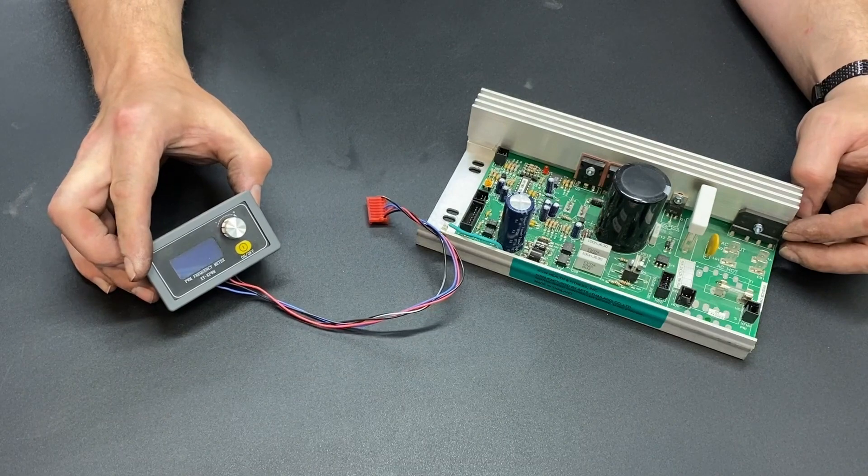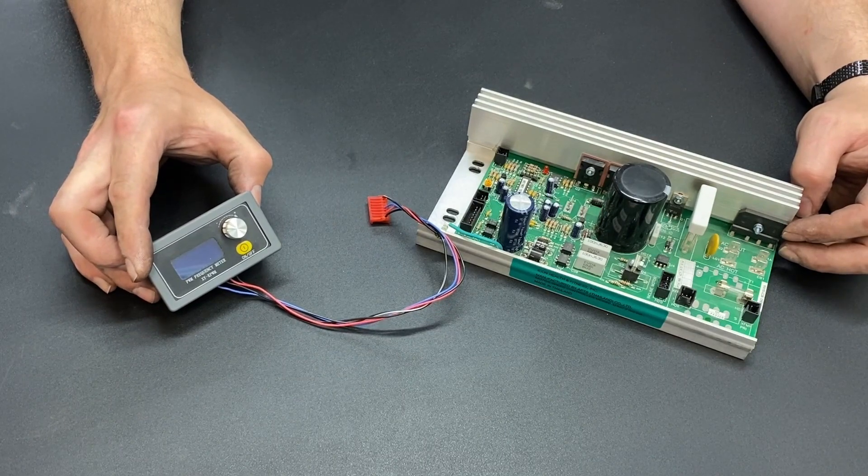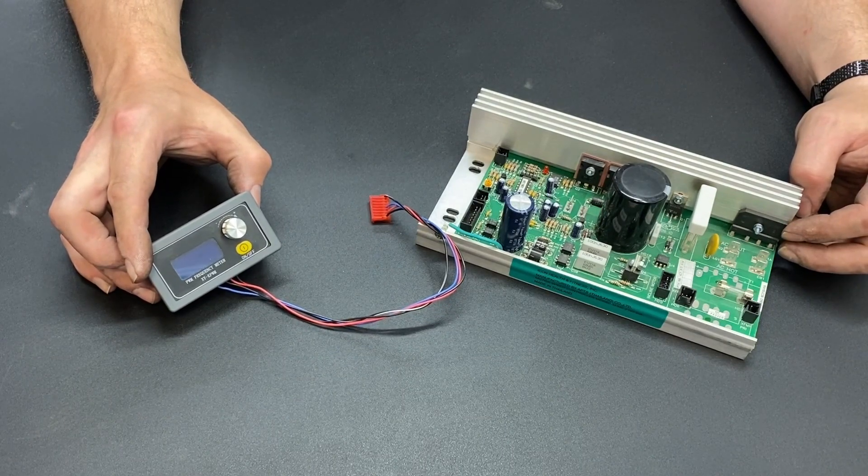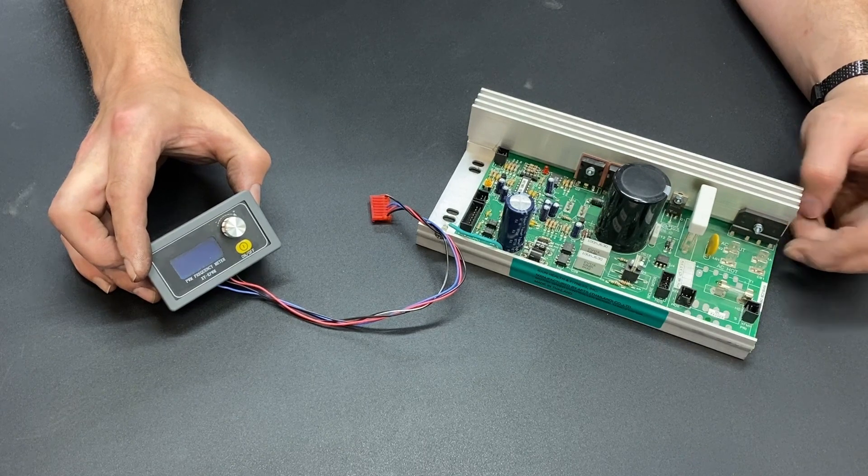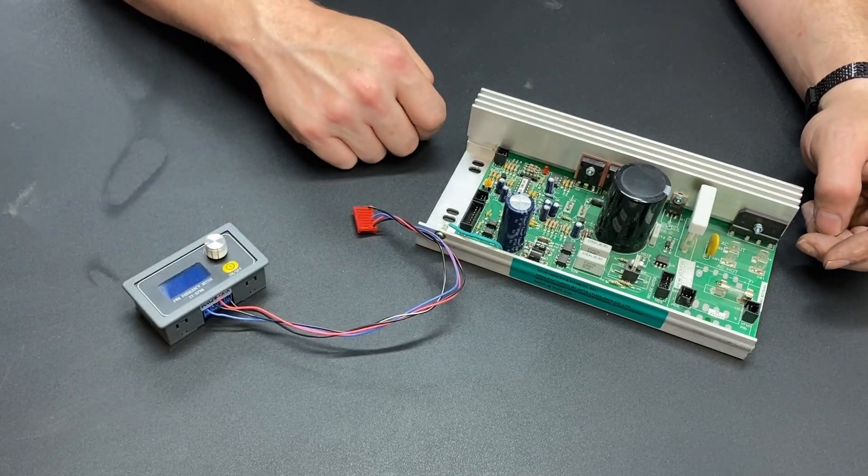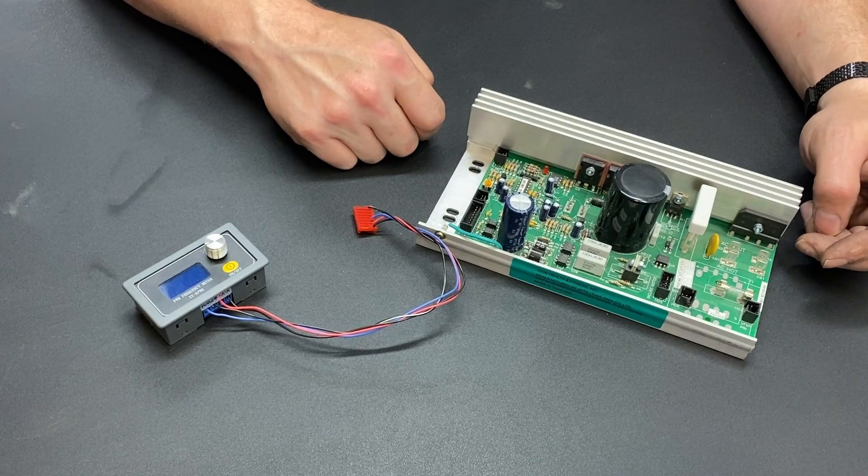This is a Pulse Width Modulator signal generator, not used to power a treadmill, but used to control an MC2100 to power a treadmill.